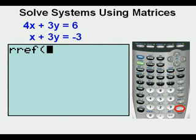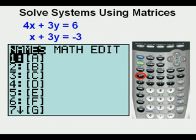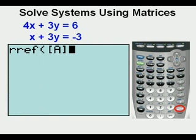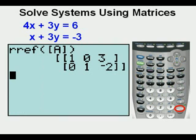Now we enter matrix A by pressing second. Then the X to the negative one key again on the left for matrix. We are in the matrix names sub-menu and A is already highlighted. Press enter. Press the closing parentheses. Press enter. This is the matrix A in reduced row echelon form.